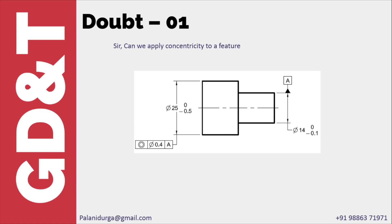Can we apply concentricity to a feature? Concentricity can be applied to a feature only. I think the doubt arose because we used a diameter symbol and the leader line of the feature control frame is pointing exactly in line with the dimension line. This is the provision given in the standard — for concentricity, the leader line can be exactly in line with the dimension line. But it does not mean that concentricity is applied to a feature of size.